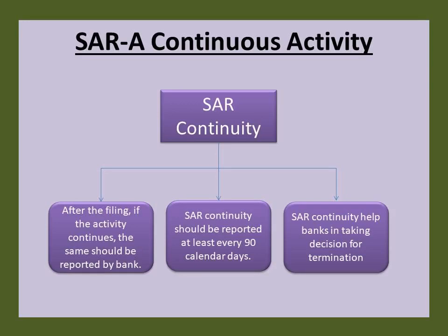Subsequent guidance permits banks with SAR requirements to file SARs for continuing activity after a 90-day review, with the filing deadline being 120 calendar days after the date of the previously related SAR filing. Banks may also file SARs on continuing activity earlier than the 120-day deadline if the bank believes the activity warrants earlier review by law enforcement. This practice will notify law enforcement of the continuing nature of the activity in aggregate and will remind the bank that it should continue to review the suspicious activity to determine whether other actions may be appropriate, such as terminating a relationship with the customer or employee that is the subject of the filing.